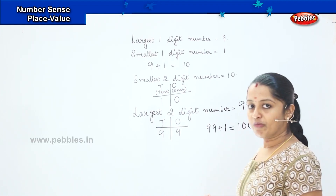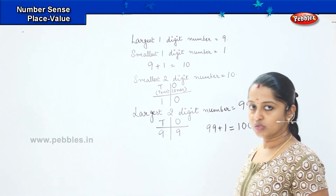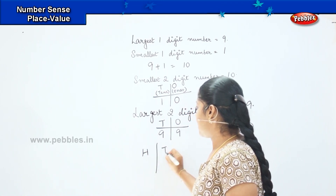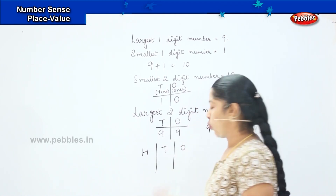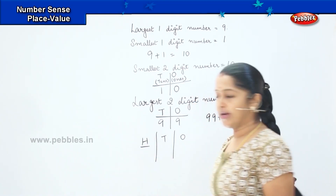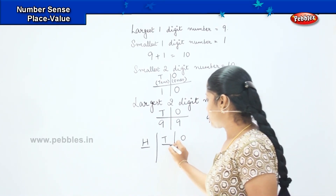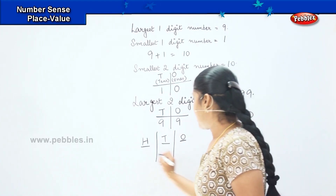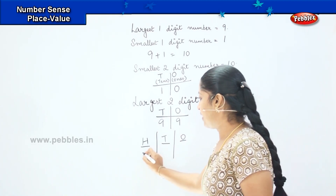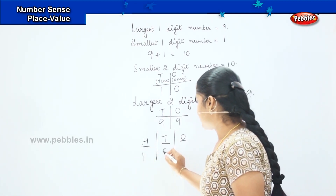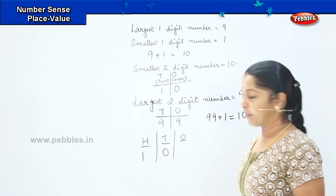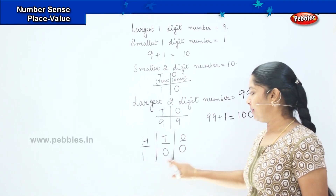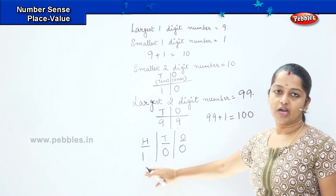So now it becomes H, T, O — where H stands for hundreds, T stands for tens, and O stands for ones. How will I write one hundred? I will write one in the H column, zero in the T column, and zero in the O column. This is the place value of hundred.